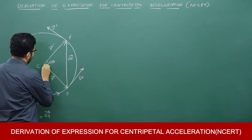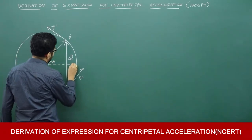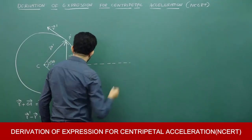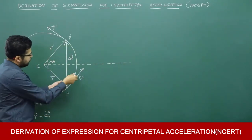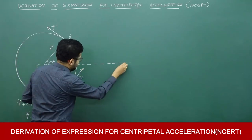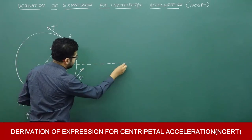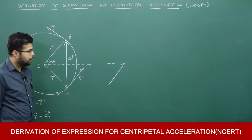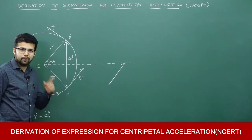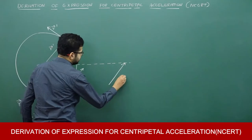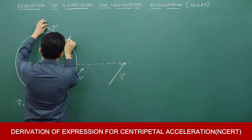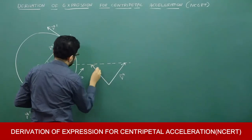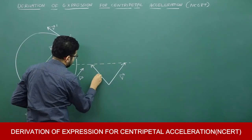Now we will bisect this angle delta theta. I will move vector v and place it here — this is vector v. I can move vector v freely in space provided I do not change its magnitude and direction. I'll bring v' and keep it here — this is v'.